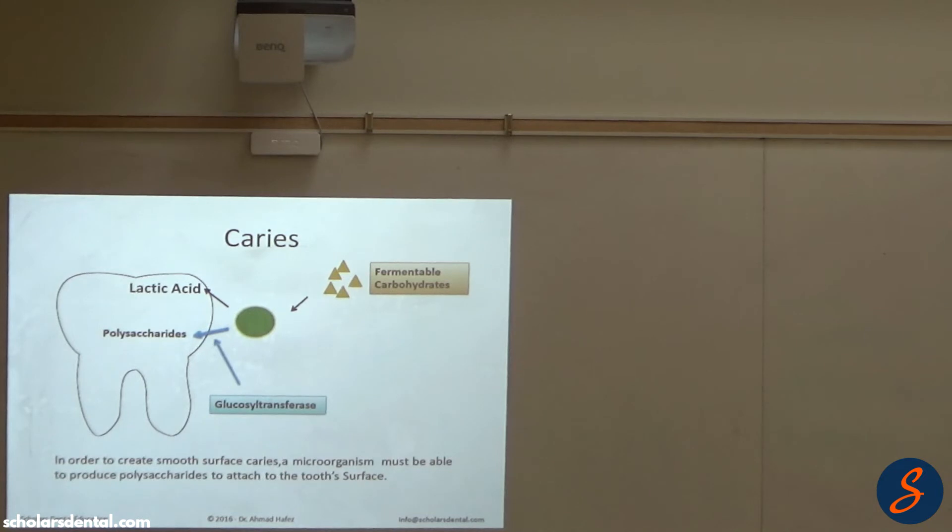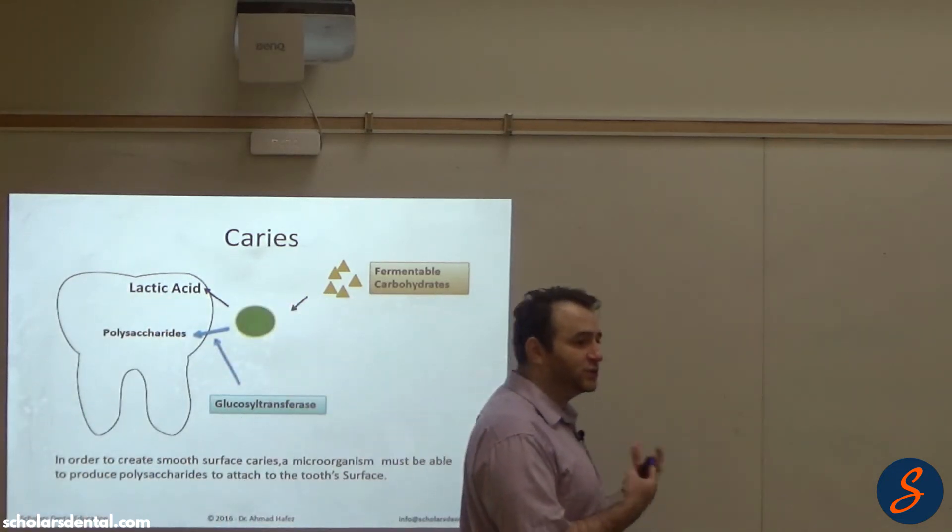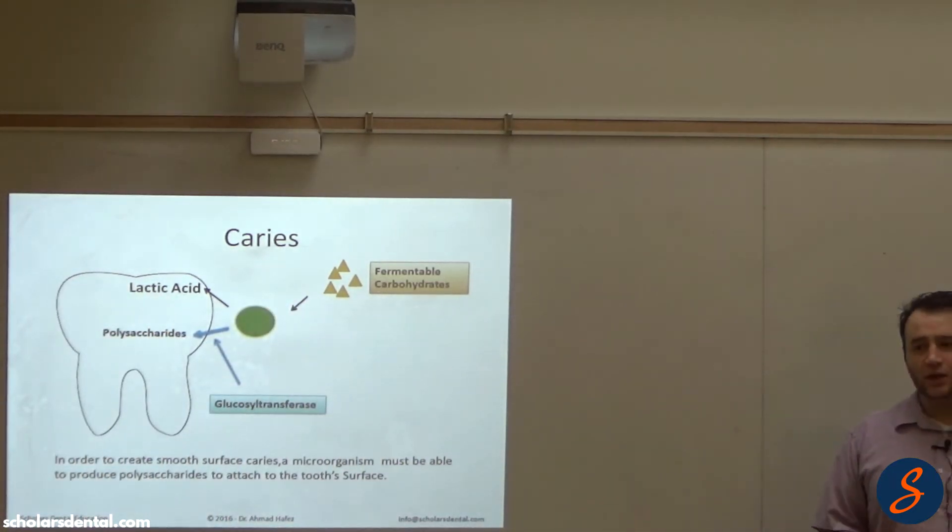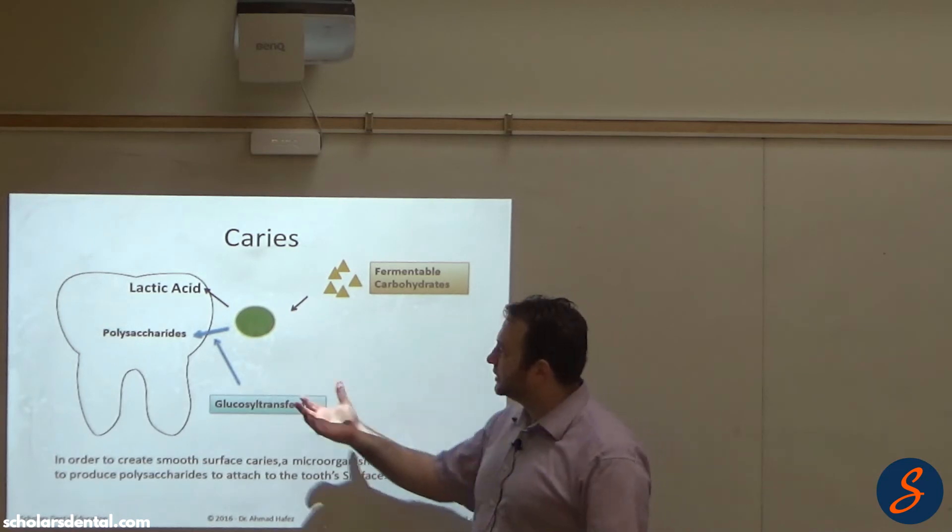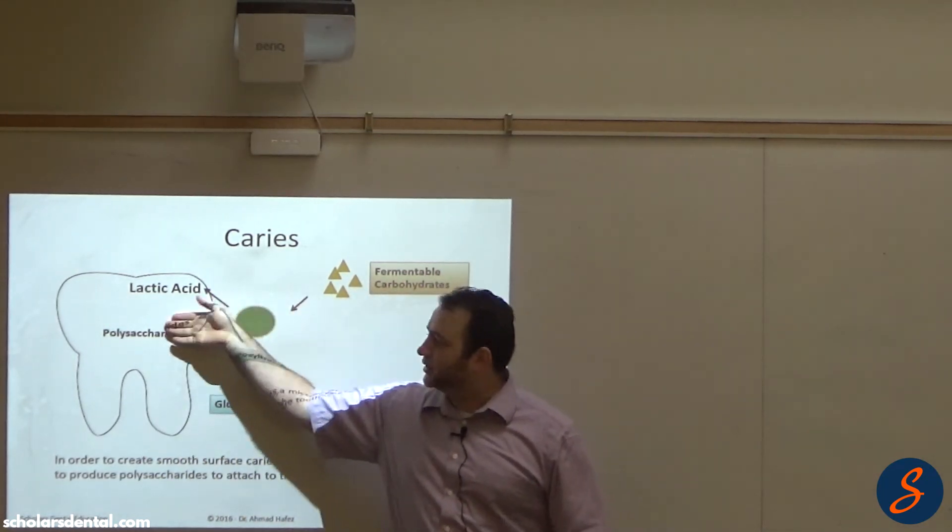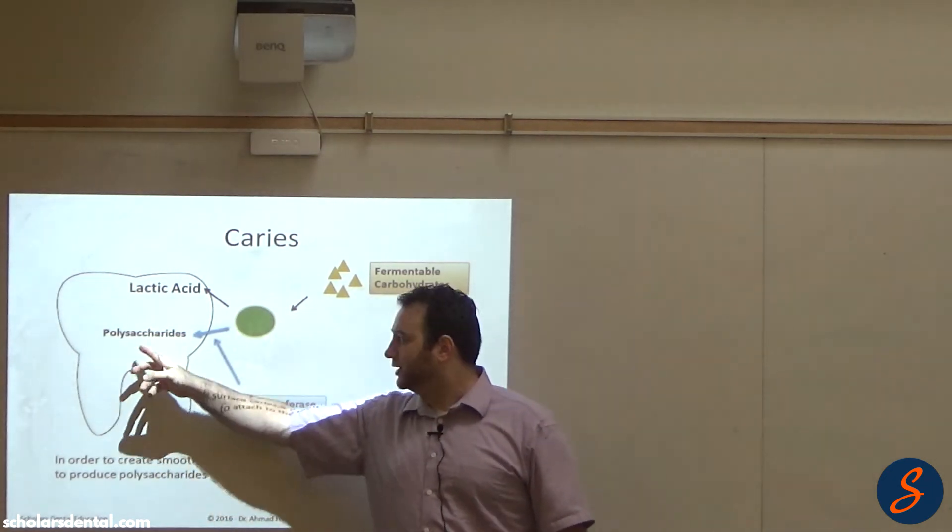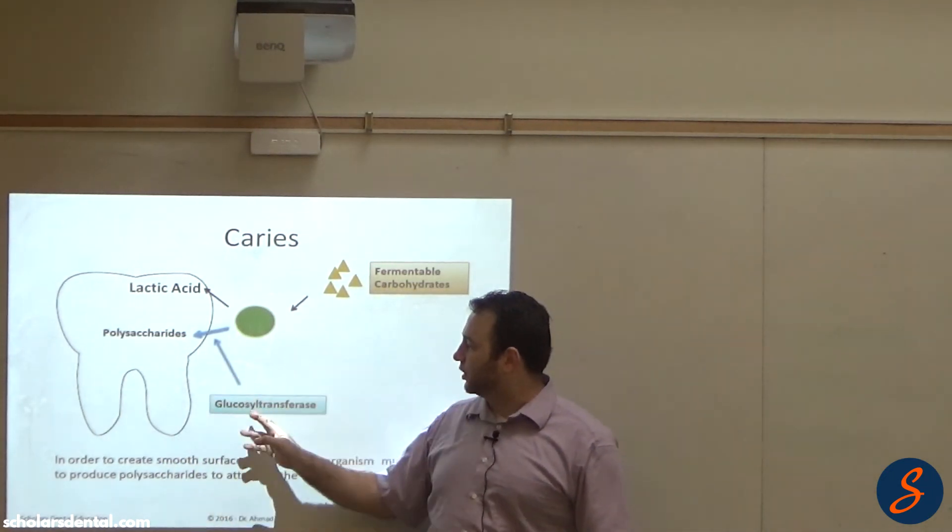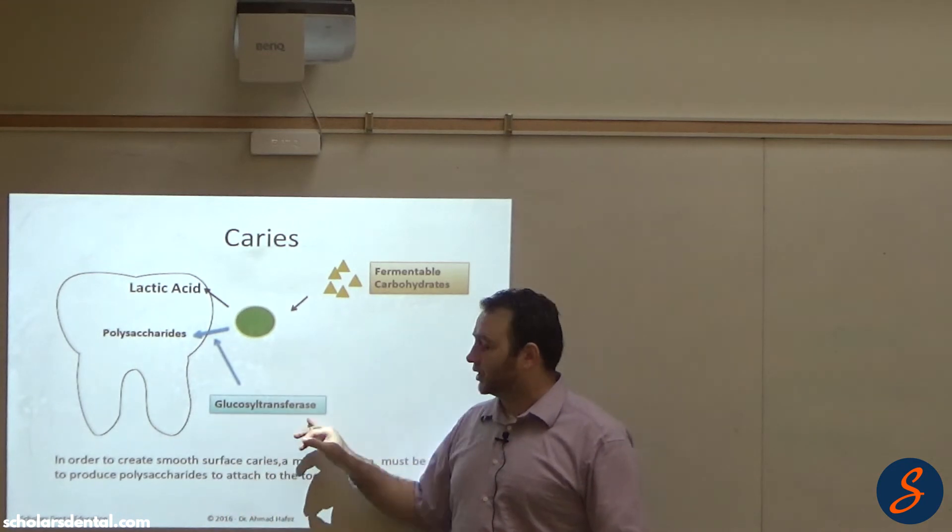Let's look at another thing from another point of view. So in order for the microorganism to create smooth surface caries, it has to be able to make polysaccharides. And the way it does it is when it eats the fermented carbohydrates, it wants to make these dextran-like polysaccharides. But it needs an enzyme to do that, and the enzyme is called glucosyltransferase.